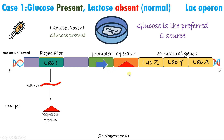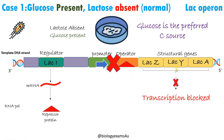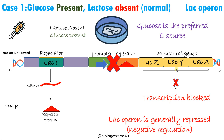Thus transcription is blocked and lac operon is generally repressed. In normal conditions, with glucose present as the preferred nutrient for E. coli, lac operon is generally off. That is why this is called negative regulation. In the absence of lactose there is no need for transcribing these structural genes involved in lactose metabolism.